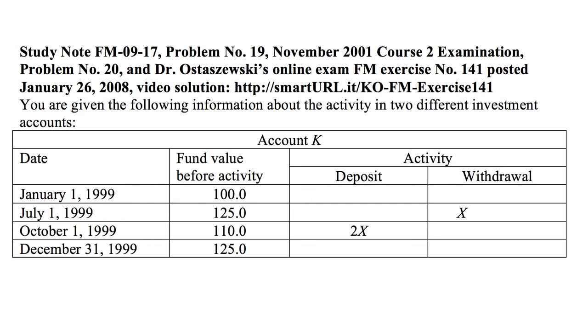Here's a problem for today for exam FM on financial mathematics. We were given the following information about the activity in two different investment accounts. Account K is on this screen now, and then we'll go to the next page to see account L.